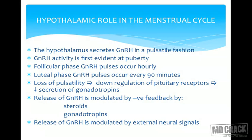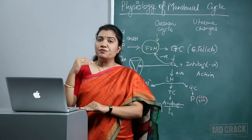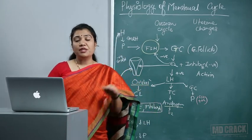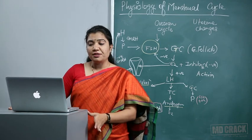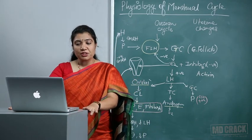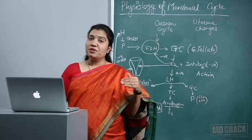If GnRH is given continuously, there is down-regulation of pituitary receptors — they become unresponsive and secretion of gonadotrophins decreases. The pulsatile nature means the hormone is present, then absent or at very low concentration. With continuous GnRH, there is down-regulation of the pituitary and FSH and LH will not be secreted. Release of GnRH is modulated by negative feedback from steroids — estrogen and progesterone — and from LH and FSH levels.